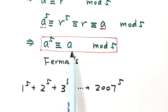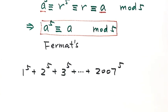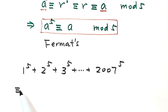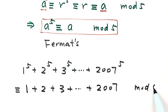Now based on this result, we have the following: 1 to the power of 5 has remainder 1 when divided by 5. Then 2 to the power of 5 has remainder 2 when divided by 5. Then this one has remainder 3 and so on. Then the last one here has a remainder of 2007 when divided by 5.